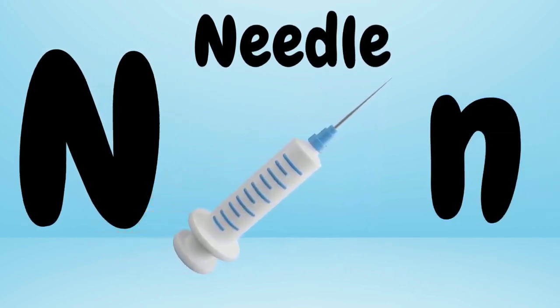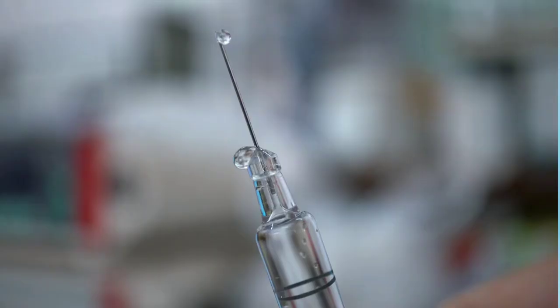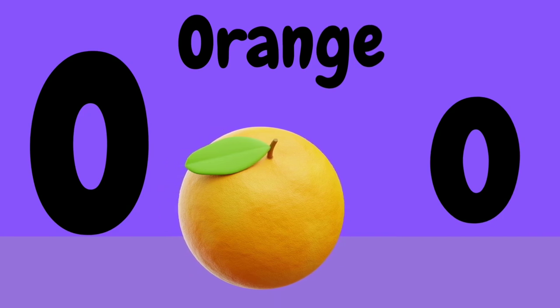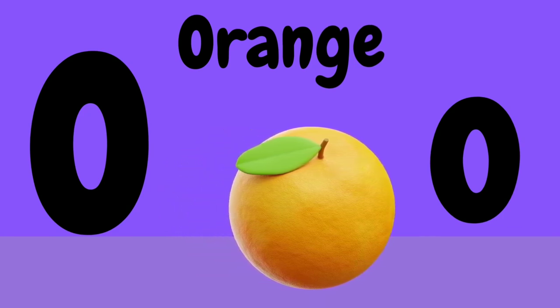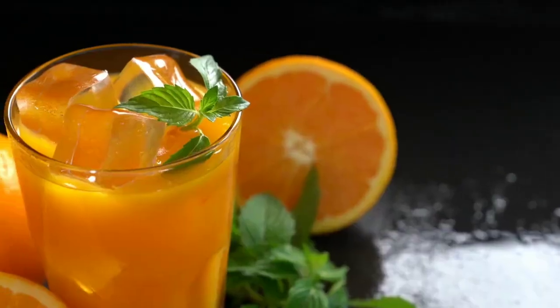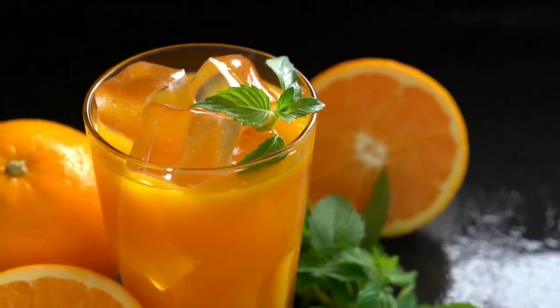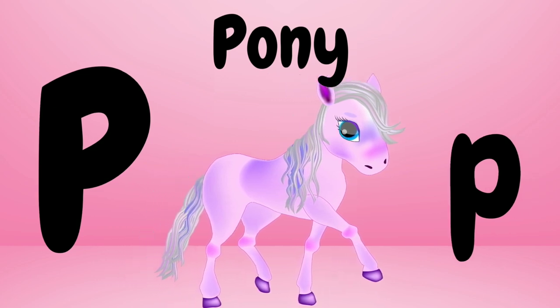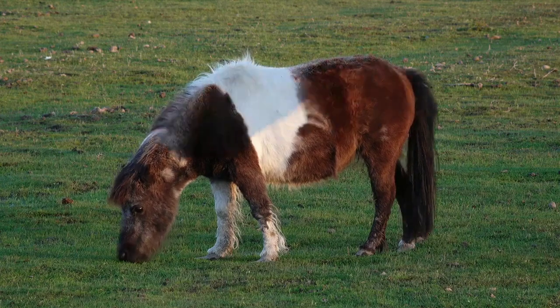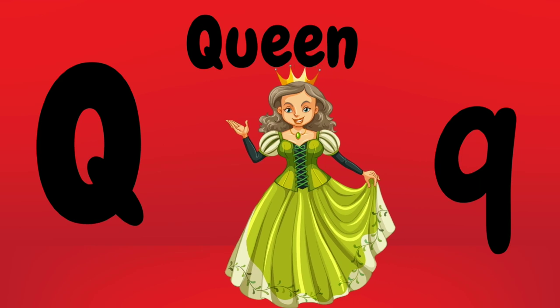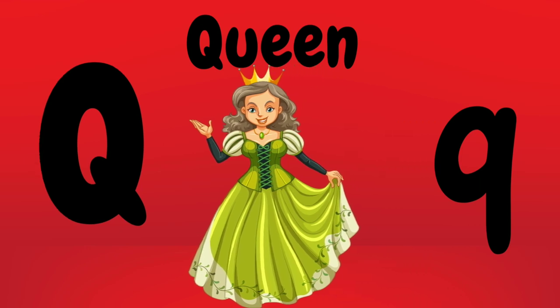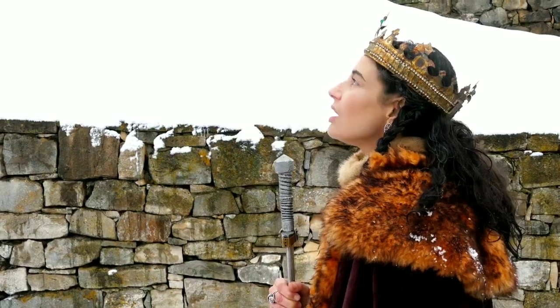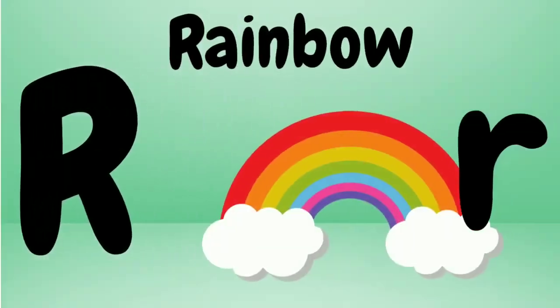Needle, needle — this is a needle. O is for orange. Orange, orange — this is an orange. P is for pony. Pony, pony — this is a pony. Q is for queen. Queen, queen — this is a queen.